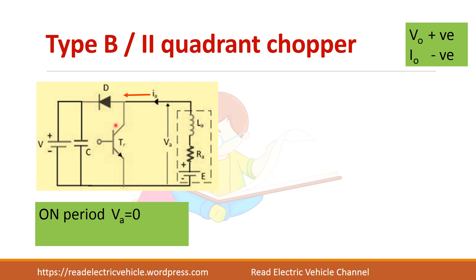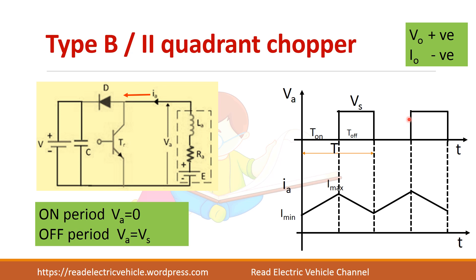During the on period, a diode and one switch are connected across the motor terminals. When this switch is on, it is a direct short, so the output voltage or armature voltage is zero. During the off period, when the gate pulse is removed from the transistor, this part is open, and the current from the motor is fed back to the supply. So during the on period the output voltage is zero, and during the off period you get the voltage Vs.